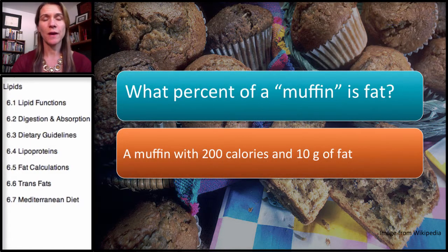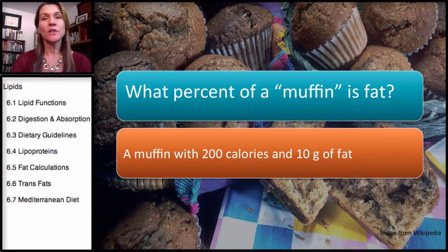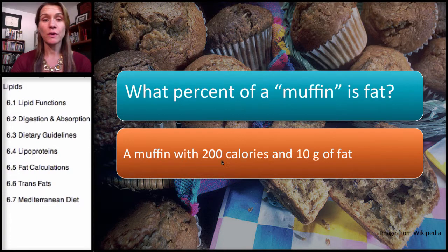Let's start with a muffin. Now, of course, you know by now that I'm not going to recommend eating a muffin because I've been talking about how it's a very refined, processed food. But it's used as a great example. So what percent of a muffin is fat? Let's take a muffin with 200 calories and 10 grams of fat.